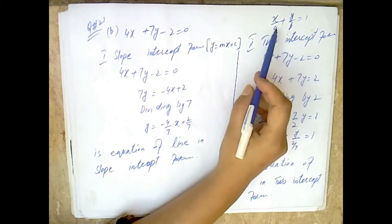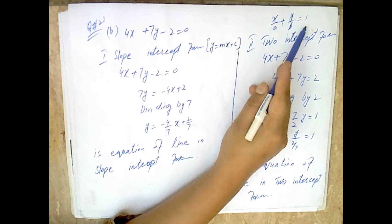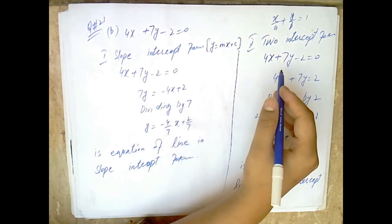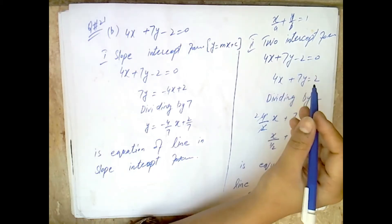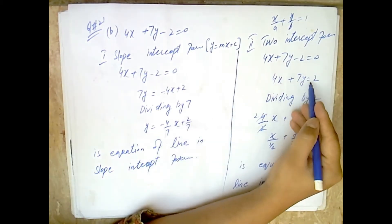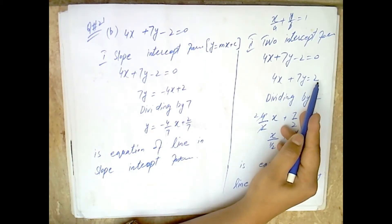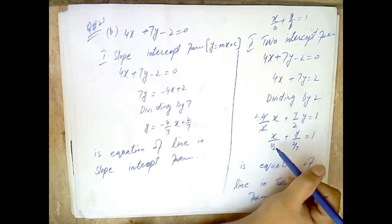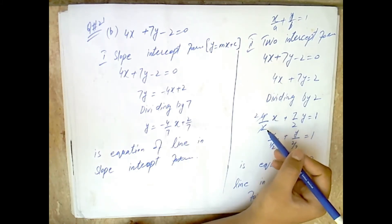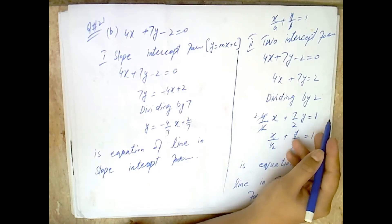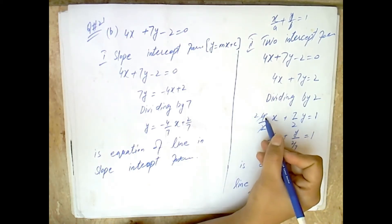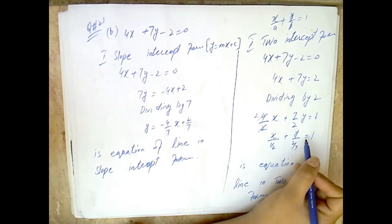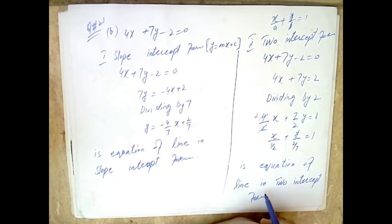Second, we find the two-intercept form x/a + y/b = 1. From 4x + 7y minus 2 = 0, we get 4x + 7y = 2. Dividing both sides by 2 gives (4/2)x + (7/2)y = 1, which simplifies to x/(1/2) + y/(2/7) = 1. This is the equation of the line in two-intercept form.